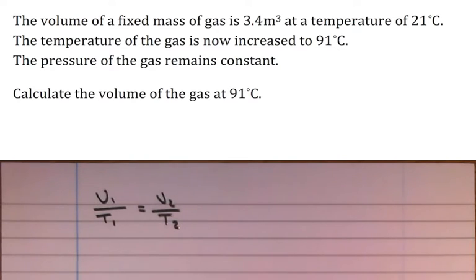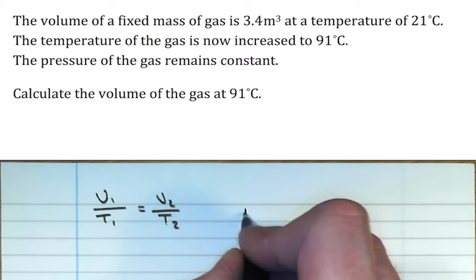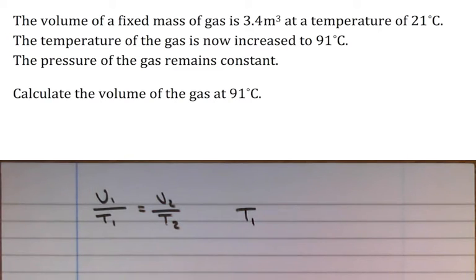Now, the most important part about this equation, or the most important thing about using it, is of course we need to change those temperatures to Kelvin. If we use degrees Celsius, 21 and 91, as they are in this question, we'll get the wrong answer.